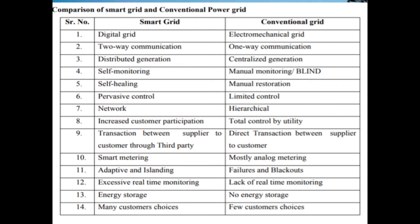Comparing smart grid and conventional power grid: smart grid is a digital grid, while conventional grid is an electromechanical grid. Smart grid uses two-way communication, whereas conventional grid uses one-way communication — only electricity is supplied. Smart grid supports distributed generation, while conventional grid uses centralized generation.